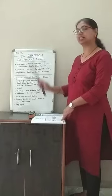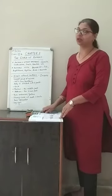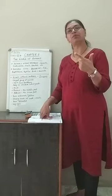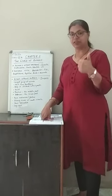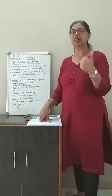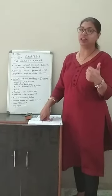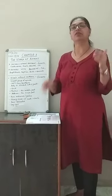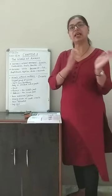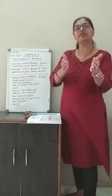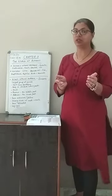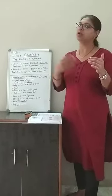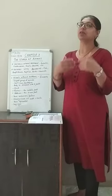But before we start chapter 3, quickly tell me what was chapter number 1 and chapter number 2. The first one was living and non-living things, in which we learnt about the characteristics of living things and non-living things. And you all have done a project also related to that, so you have understood the chapter better.